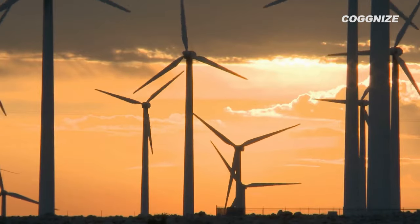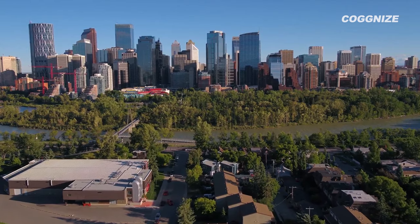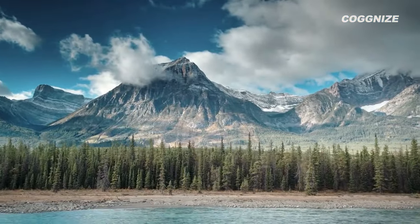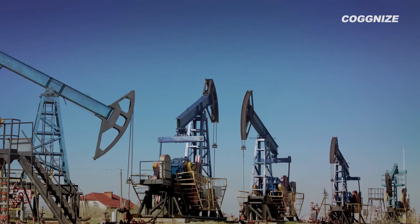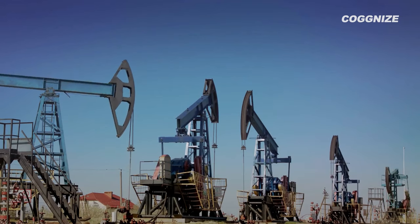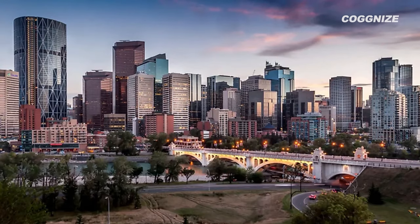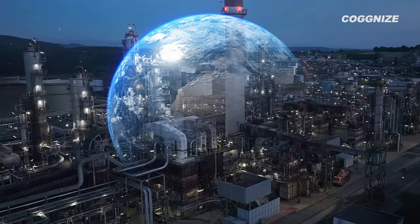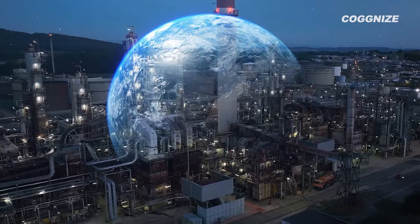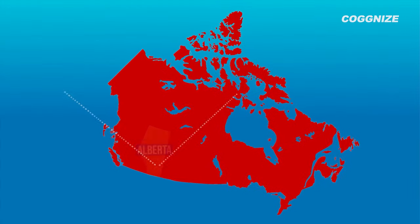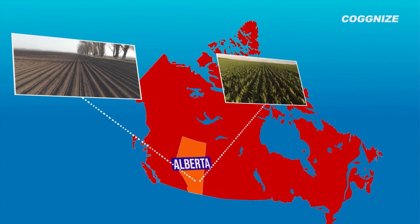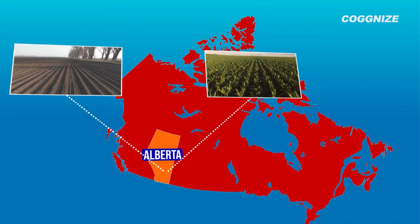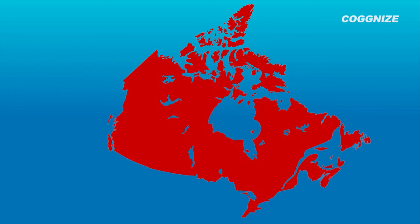A significant factor that contributes to the population distribution in Canada is the availability of resources. In Alberta, for instance, the concentration of the population around Edmonton can be attributed to the region's role as the epicentre of Canada's oil production. Alberta's contribution to Canada's oil industry is a key reason why Canada is the world's fourth largest oil producer. Additionally, the fertile land in Alberta is suitable for agriculture, a rarity in Canada, further attracting people to settle in the region.